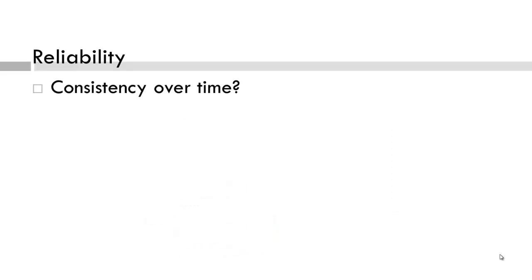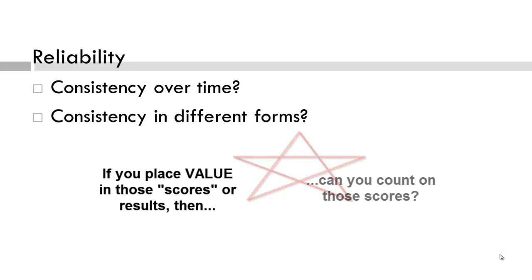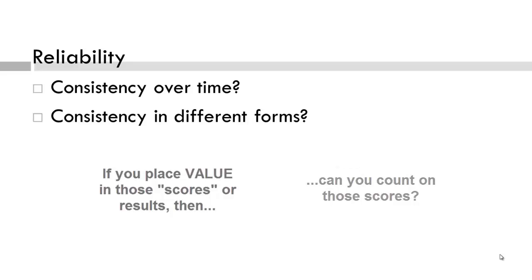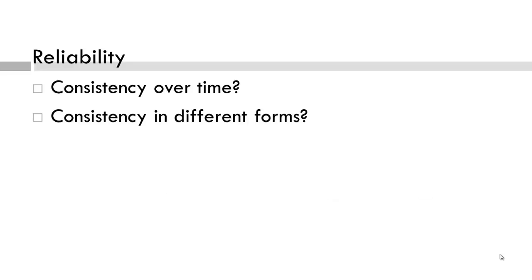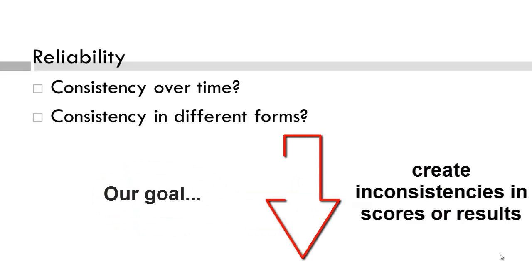What does this mean for instructors? Another way to think about reliability is whether students would achieve the same results if they completed the test at two different times, or if they took a similar version of the test. If you're going to place value in the test result, you need to consider if the scores or results are reliable or consistent. We are talking about how error-free our assessments are. But really, there is no perfect reliability, because random errors can create inconsistencies. Our goal is to minimize the errors to enhance the reliability of results.